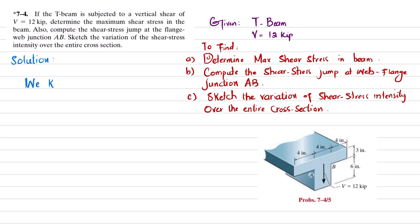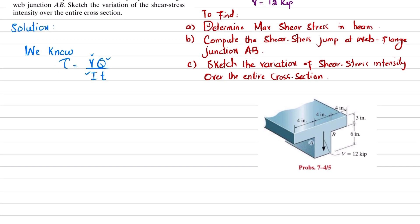We know that shear stress is equal to VQ divided by It. We have V, but we do not have Q, I, or t — t is the thickness that depends on the section. First we will find I, but remember we do not know the location of the neutral axis, so first we will find the neutral axis location and then move to find I.